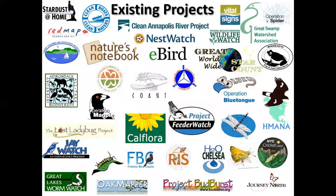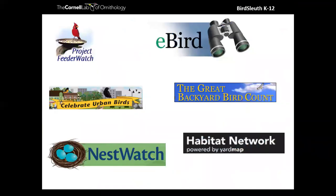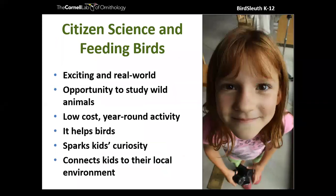Citizen science is a massive global effort to develop databases so we can better understand the natural world. There are citizen science projects in a diversity of topics, ranging from completely outdoors to completely online, from one-off supplemental activities to full curriculum projects. You can do them just one time or do a long extensive project. At the Cornell Lab of Ornithology, we have six citizen science projects, and they all range in type of data collected or when the data is collected.